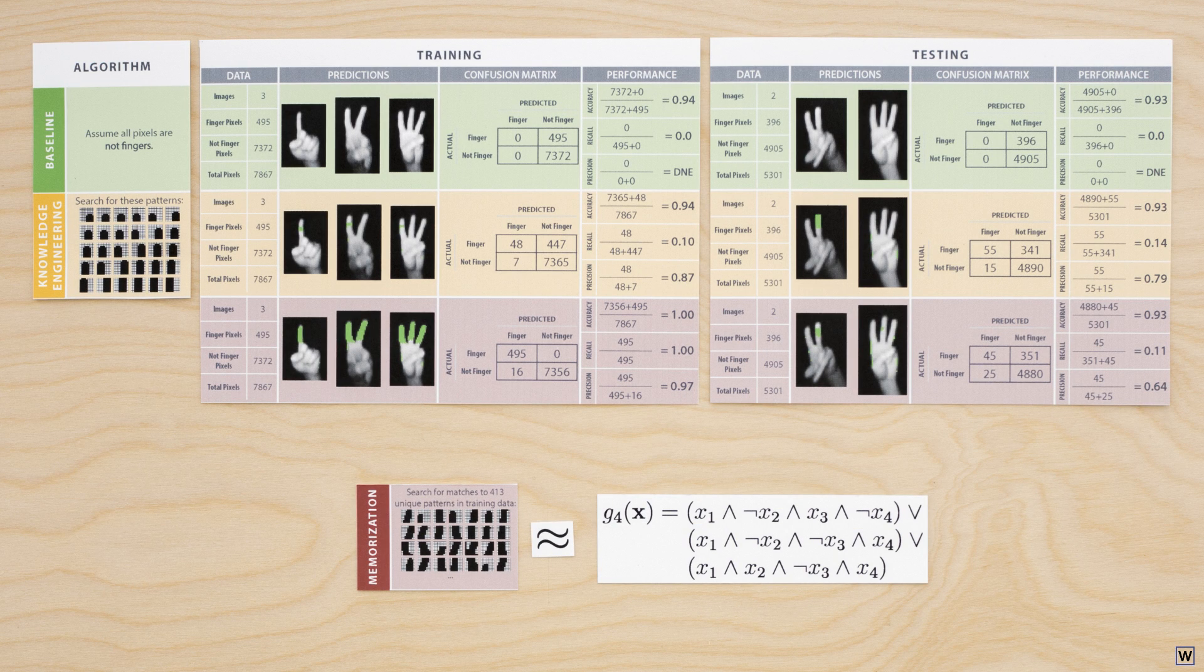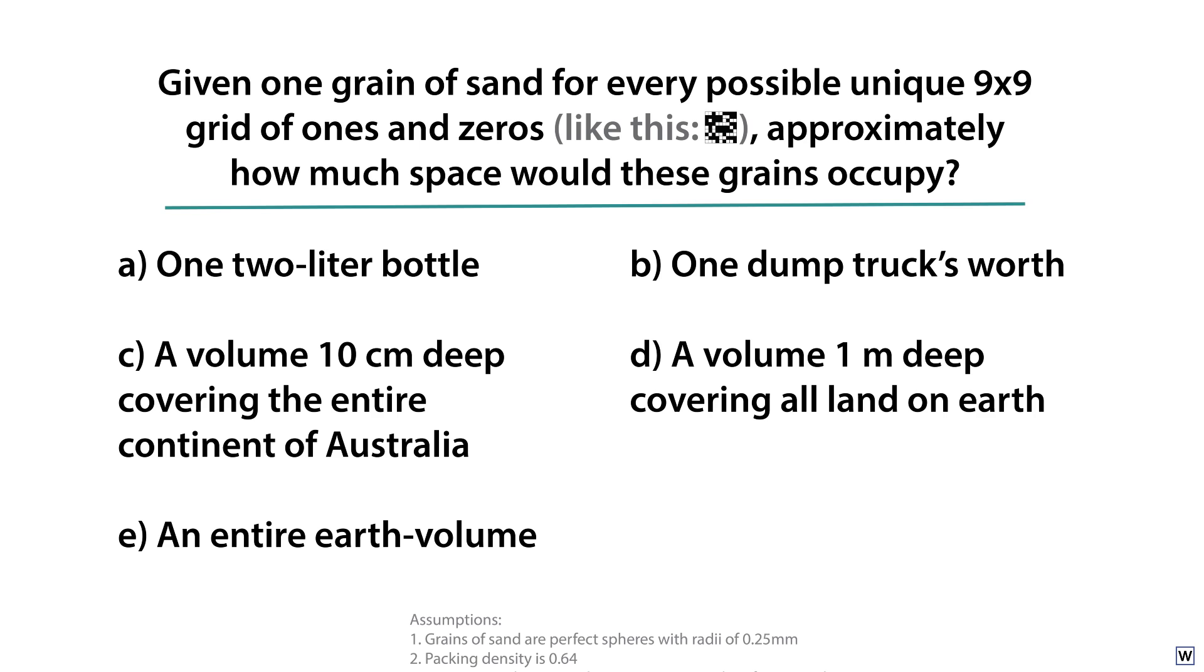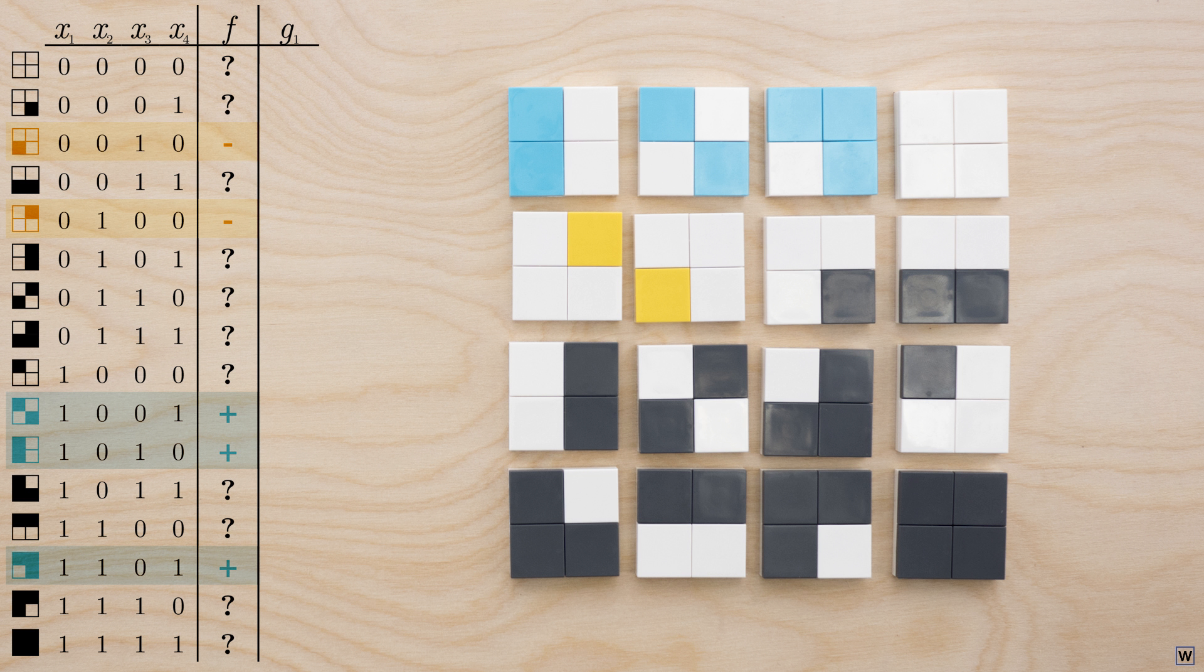One way to think of our memorization strategy is as choosing from a huge set of rules that has a rule that exactly matches any possible set of training data. Of course, there is one big difference here. As we saw with our grains of sand question, on our real 9x9 data, there are way more possible examples than the 16 of our toy data set.